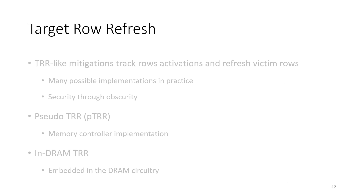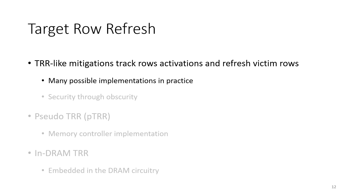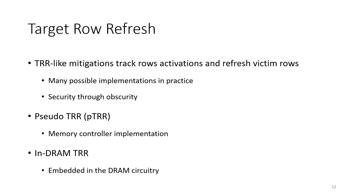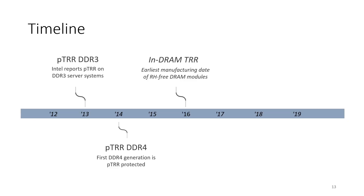TRR is an umbrella term used in practice to identify many different implementations; we refer to these as TRR-like mitigations. All these mitigations share a common idea: victim rows must be refreshed to prevent flips, and row activations must be monitored to detect rows too frequently activated. However, target row refresh operations depend on the specific vendor designs, about which we have no details because vendors enforce the security-by-obscurity principle. We could identify two main classes of implementations: pseudo-target row refresh, implemented in the memory controller, and INDRAM target row refresh, implemented in the DRAM circuitry itself, requiring no support from the memory controller.